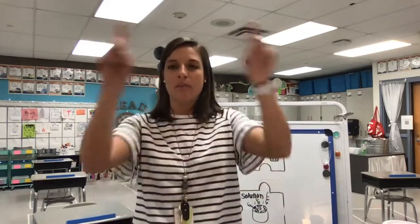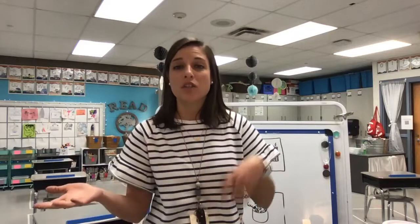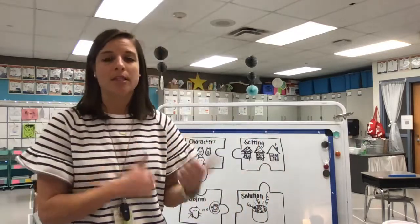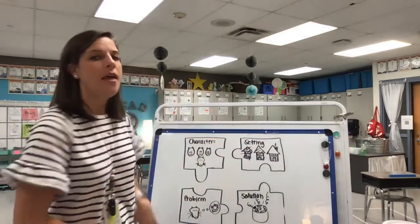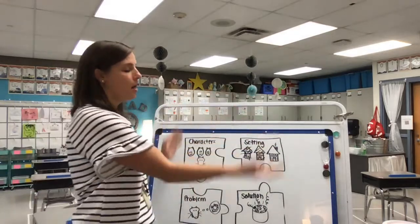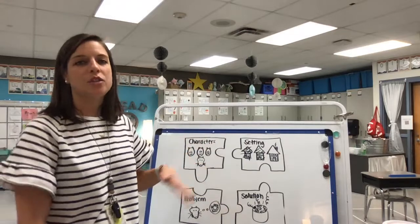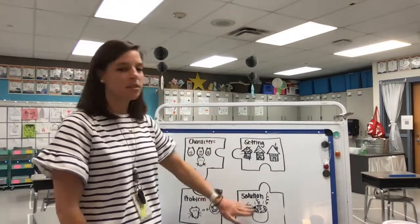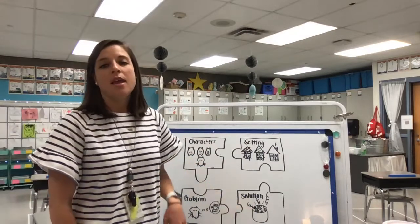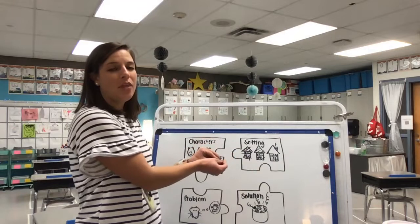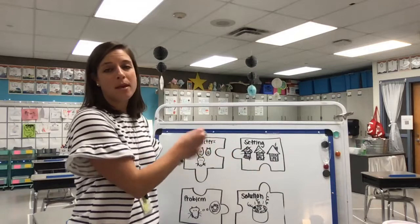We've talked about the main idea and supporting details, sequencing, and characters and setting. So now we're talking about story elements — the parts of a story that make it interesting. On the board we looked at yesterday are characters, setting, problem, and solution, and we saw that when all of those are put together, that's what makes a story.